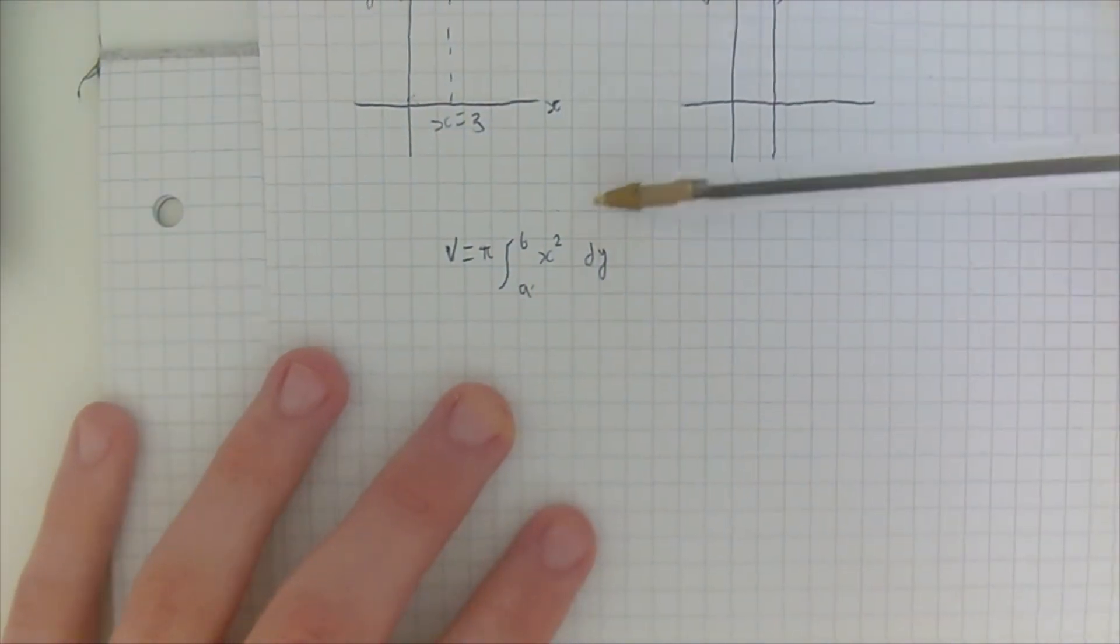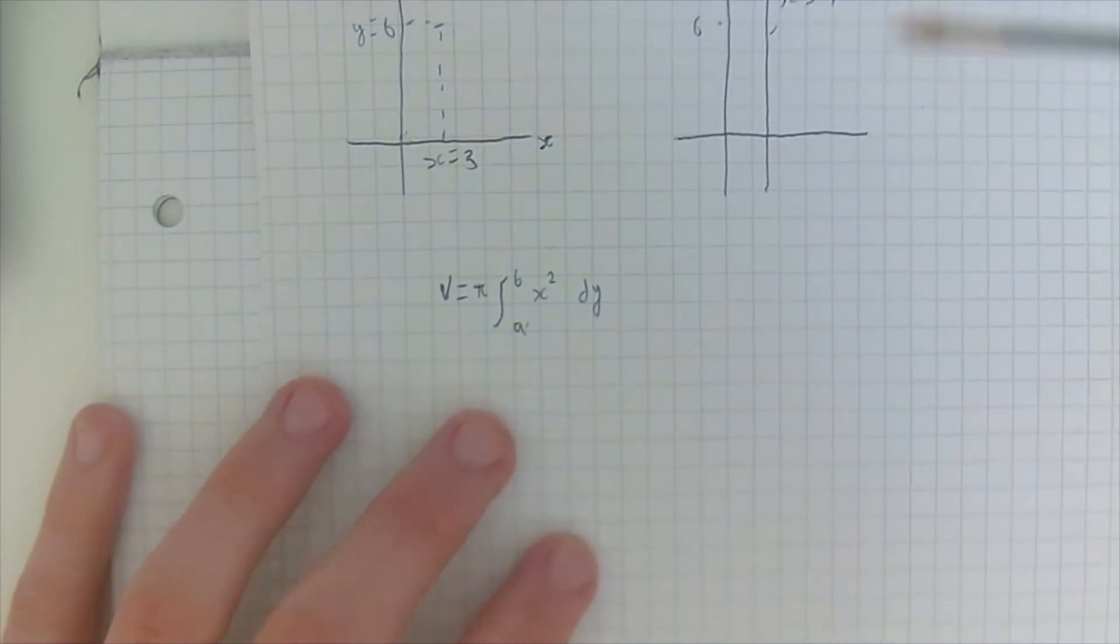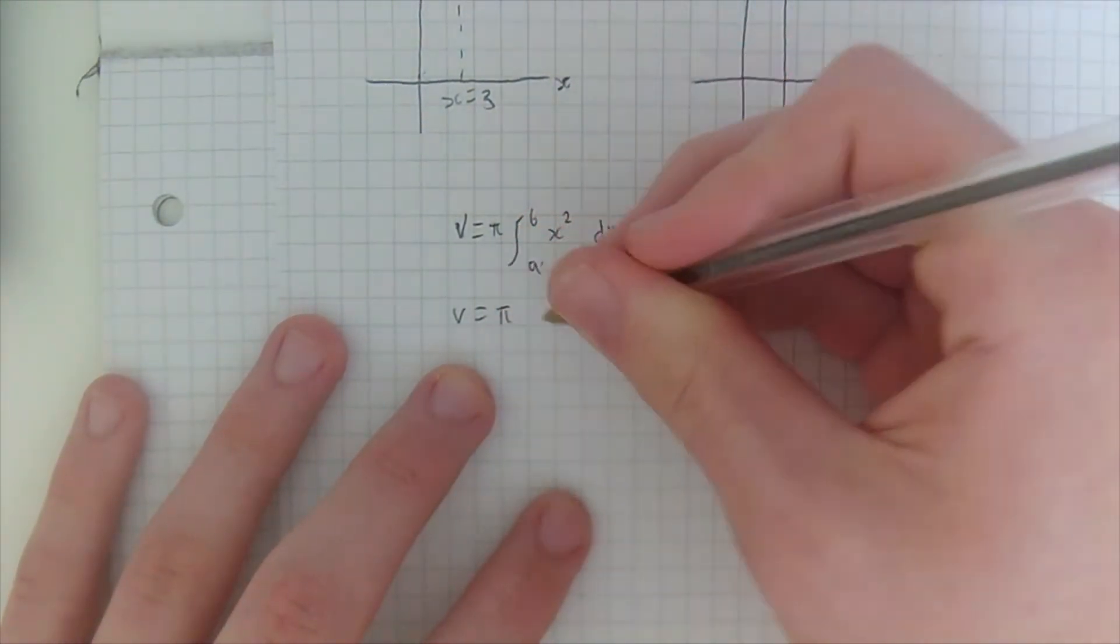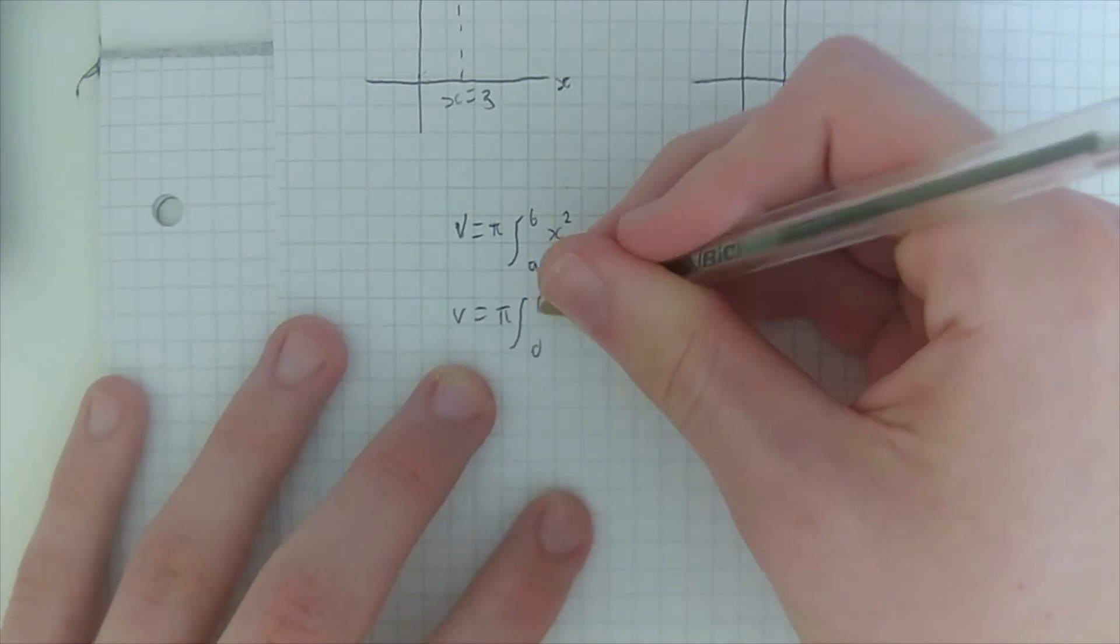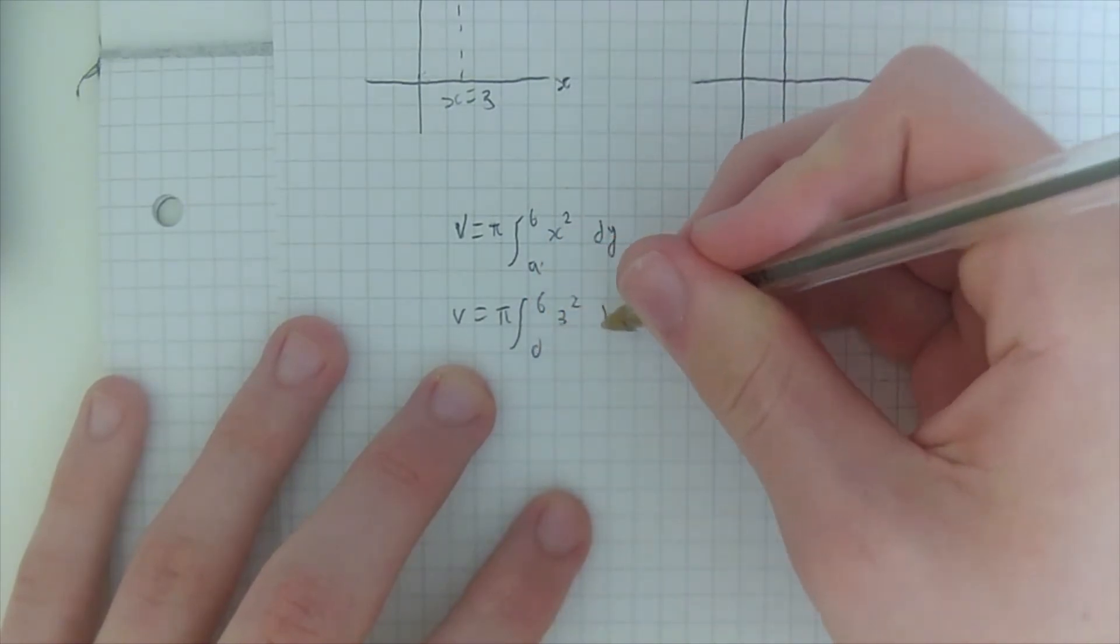And x squared is of course three. So if we just plug those numbers in, 0, 6, 3 squared dy.